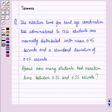Hello and welcome to the session. In this session we will discuss a question which says that the reaction time for a hand-eye coordination test administered to 1750 students are normally distributed with mean 0.45 seconds and a standard deviation of 0.05 seconds. About how many students had reaction time between 0.35 and 0.55 seconds?